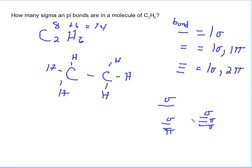A question you might get on a test: how many sigma bonds and pi bonds are in a molecule of C2H6? You just follow the rule—they're all single bonds, so every bond is a sigma. You just count them: one, two, three, four, five, six, seven. So this molecule has seven sigma bonds and zero pi bonds, because they're all single bonds.